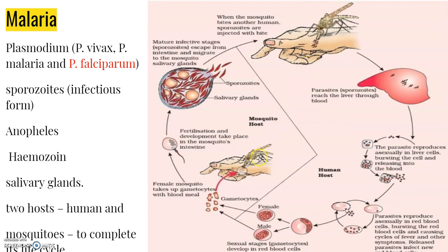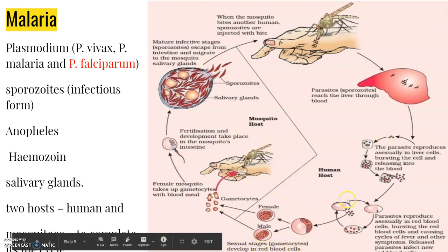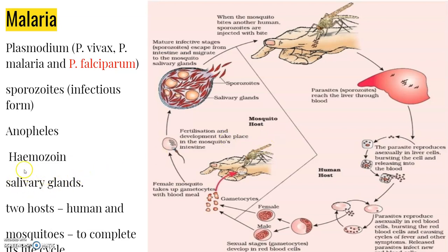A malarial parasite requires two hosts — human and mosquito — to complete its life cycle. The female Anopheles mosquito is the vector or transmitting agent. The mature infective sporozoites escape from the intestine and migrate to the mosquito's salivary glands. The gametocytes, which are the sexual stage, develop inside the red blood cells. When the RBCs rupture, hemozoin is released, causing all the symptoms of malaria.